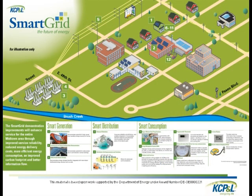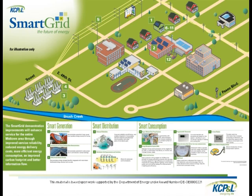Our Smart Grid demonstration grant is unique among government-funded grants because we're doing it all — end-to-end. We're doing smart generation, battery storage — one megawatt battery storage at our substation — smart distribution, distribution automation including auto DR, demand response events generated right from our distribution system. We're also doing AMI meters with a Landis and Gyr meter mesh network, and smart consumption, meaning everything inside the customer's home.